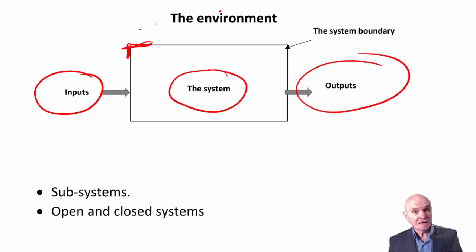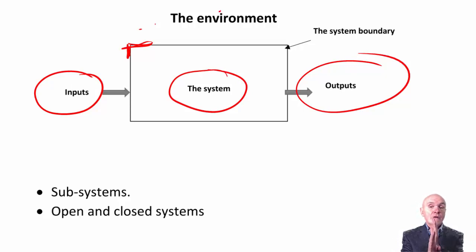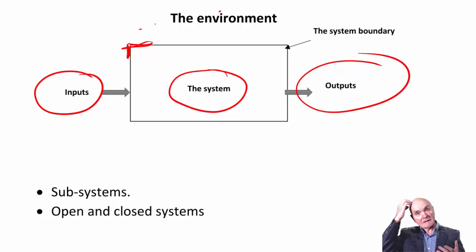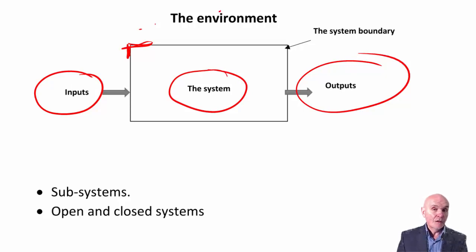Each of these subsystems has got input and output. What's important, getting back to systems boundary, is where the dividing line is — where the system boundary is — because that determines where the responsibility is. If we're looking at inventory and somebody needs to order new raw materials, should it be the purchasing department, somebody from inventory in the warehouse, or people in the manufacturing department?